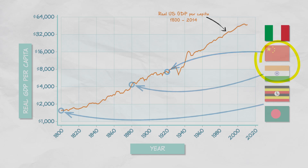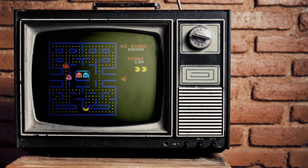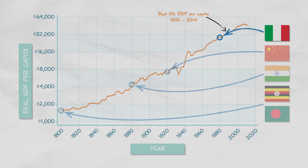Italy has a GDP per capita today which is about what the United States had around 1980. I remember 1980 — I got an Atari. It was pretty good. Life was good. So life in Italy is pretty good.